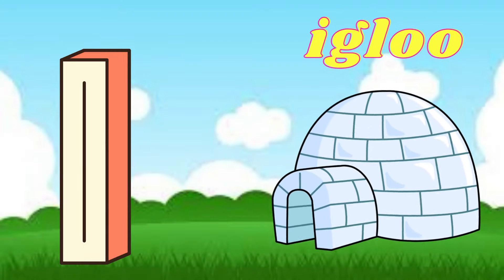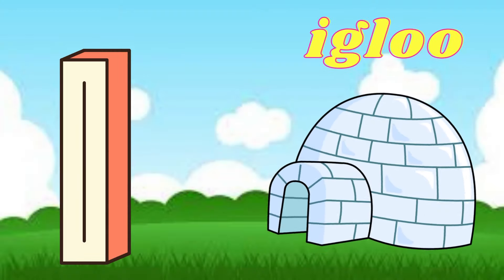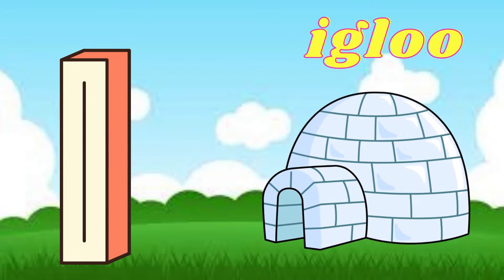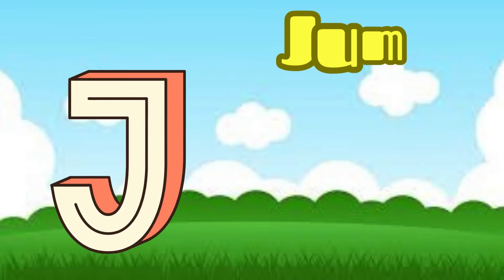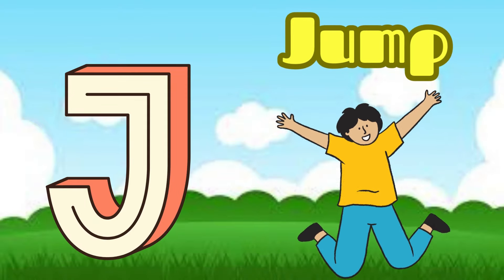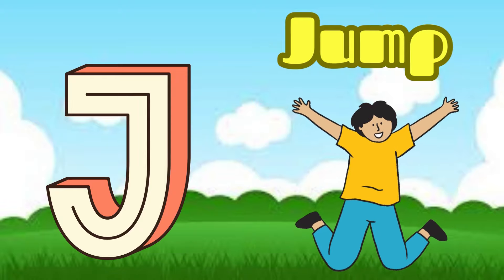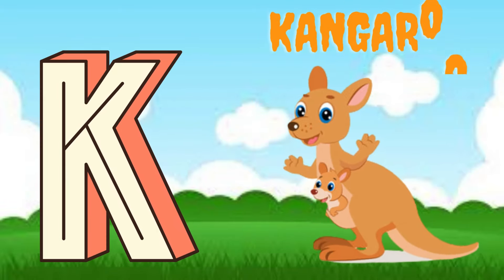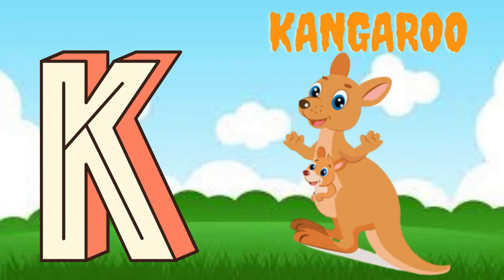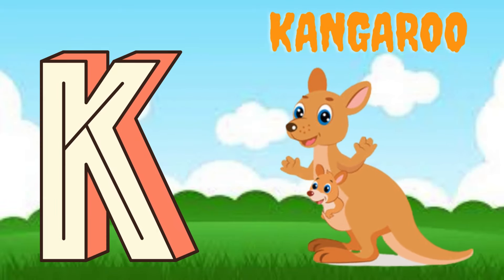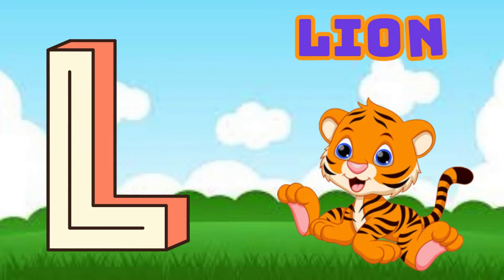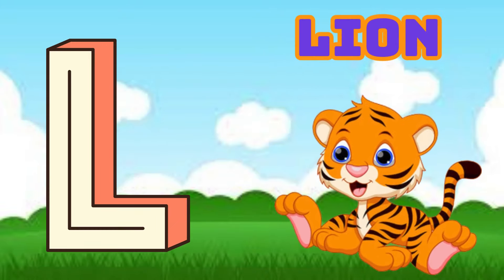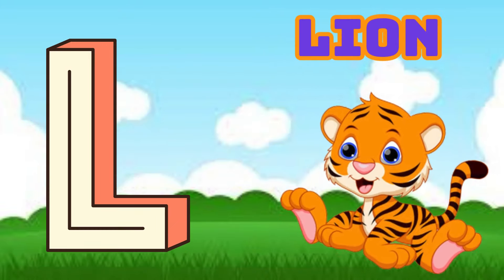I is for Igloo, I-I-Igloo. J is for Jump, J-J-Jump. K is for Kangaroo, K-K-Kangaroo. L is for Lion, L-L-Lion.